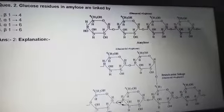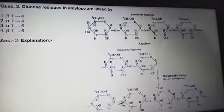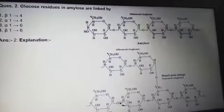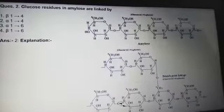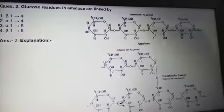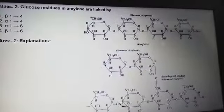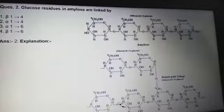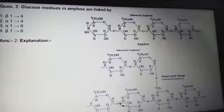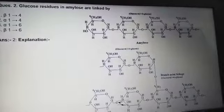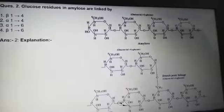The OH at the first carbon and OH at the fourth carbon are both above the plane — that is why they form an alpha linkage. If they were on opposite planes — one above and one below — then it would form a beta-1,4 linkage. But in the linear chain of amylose, it forms alpha-1,4 linkage.